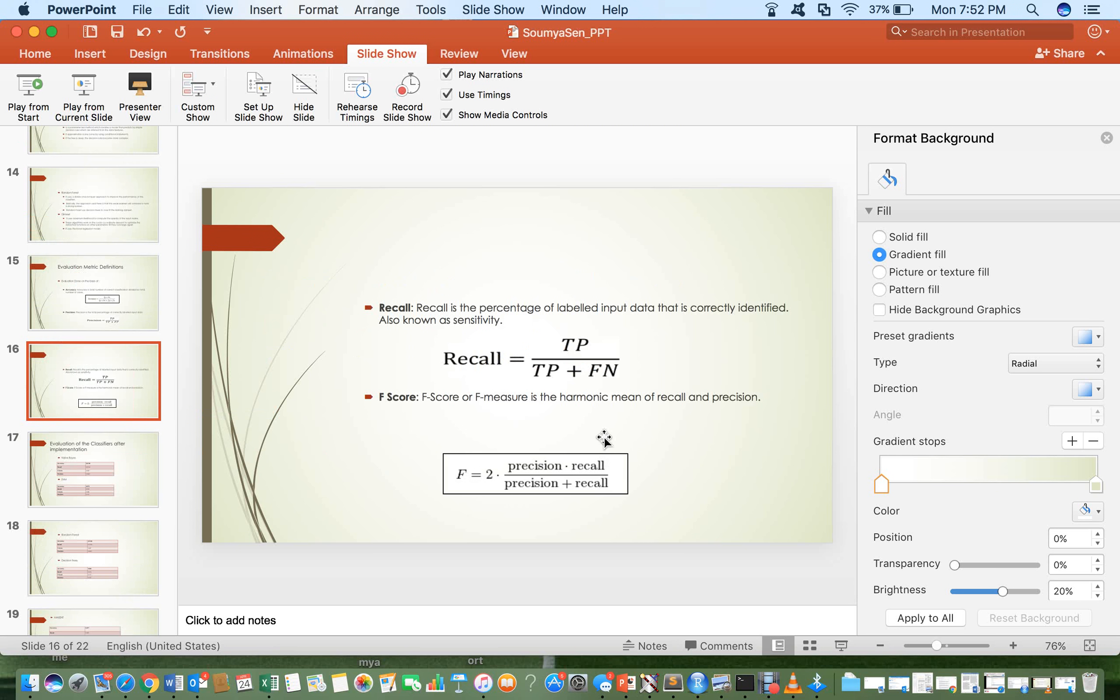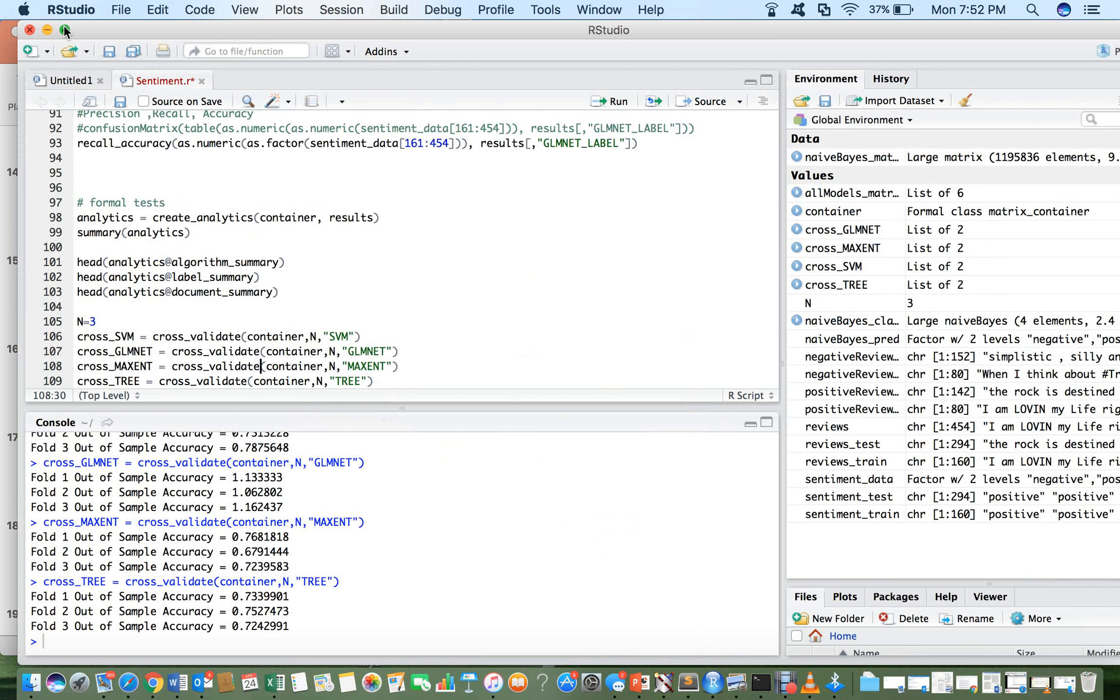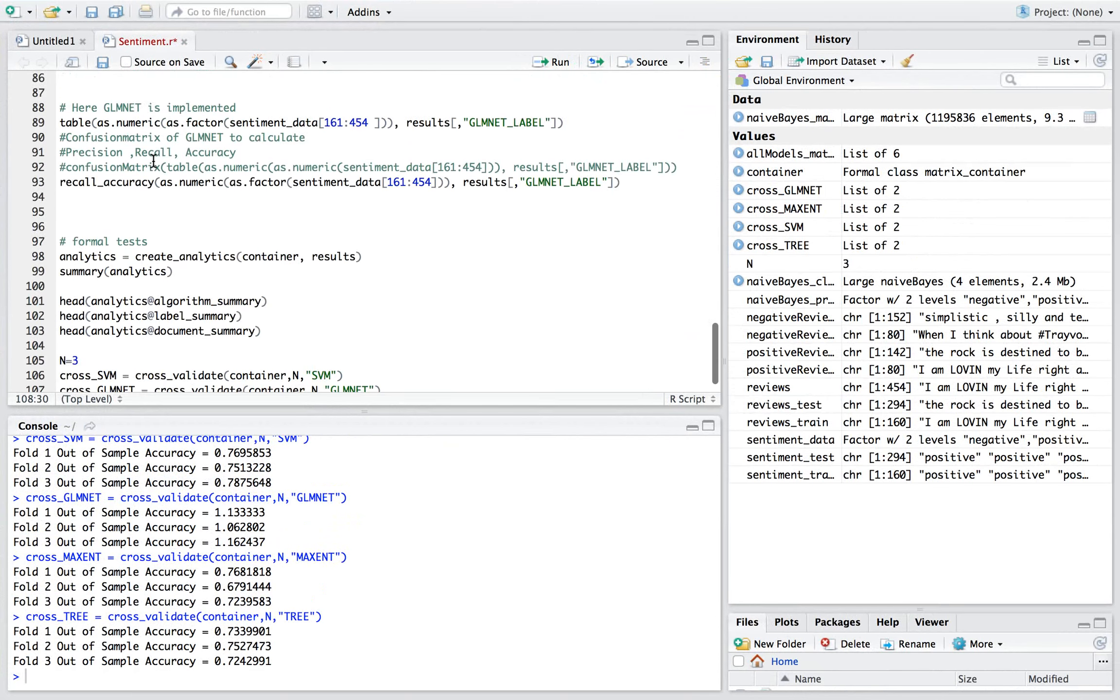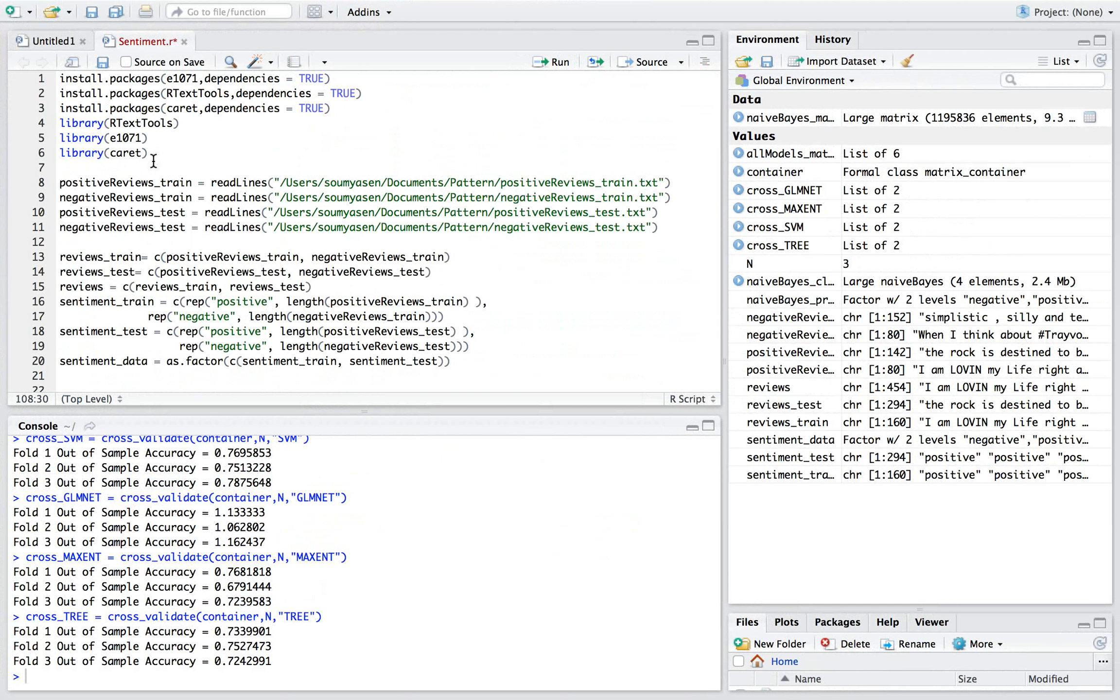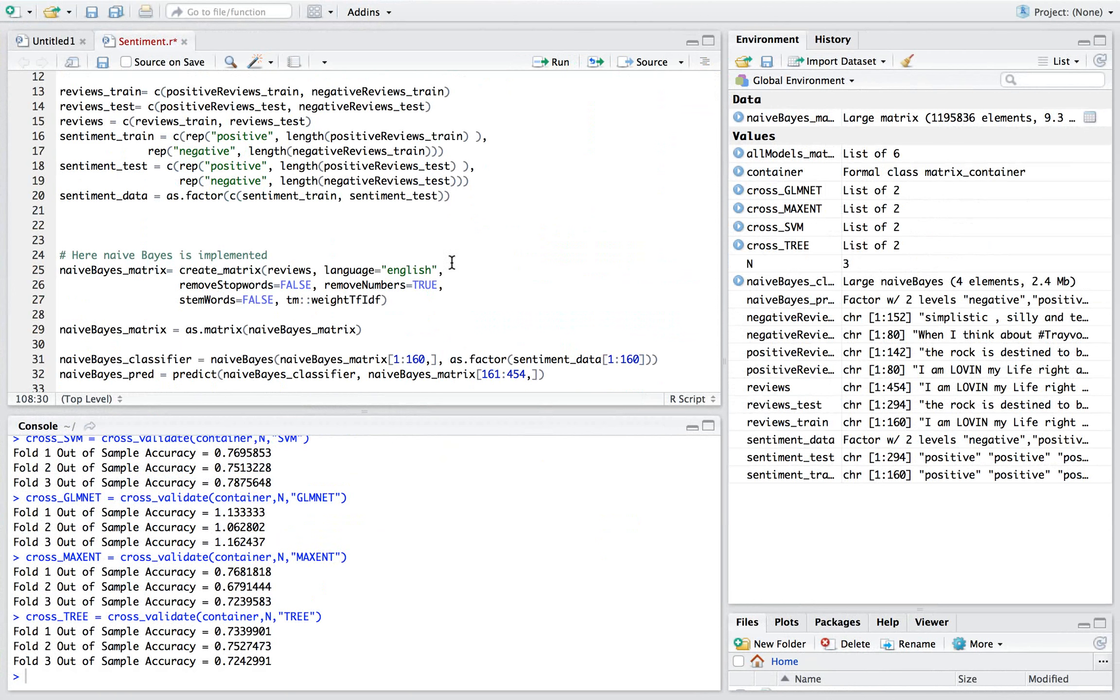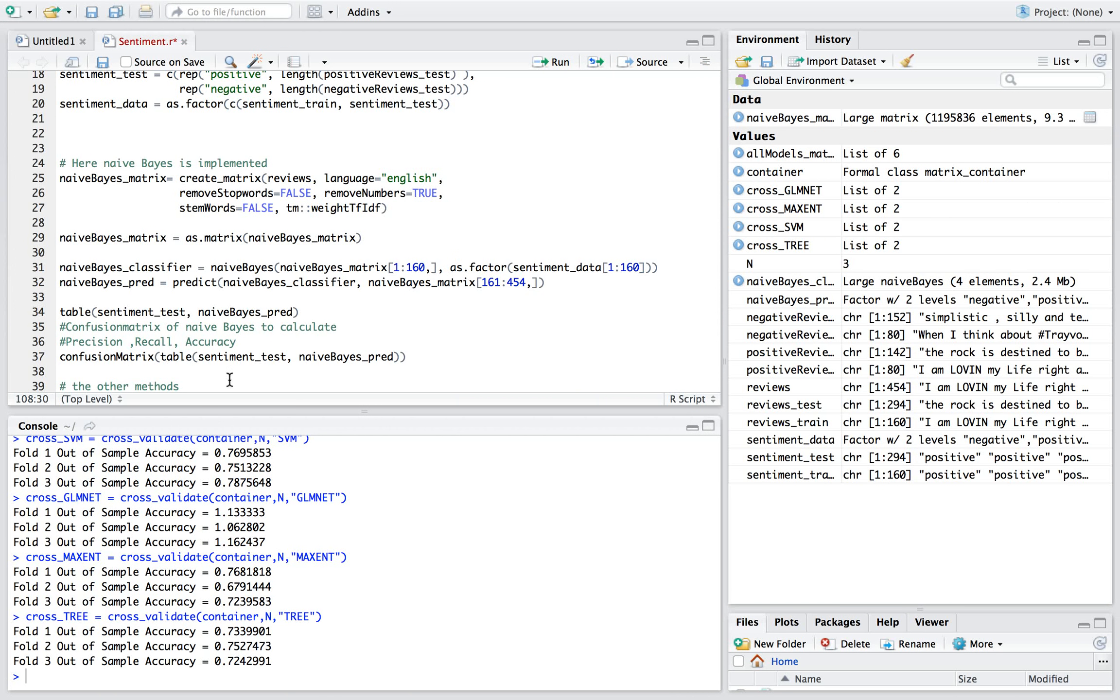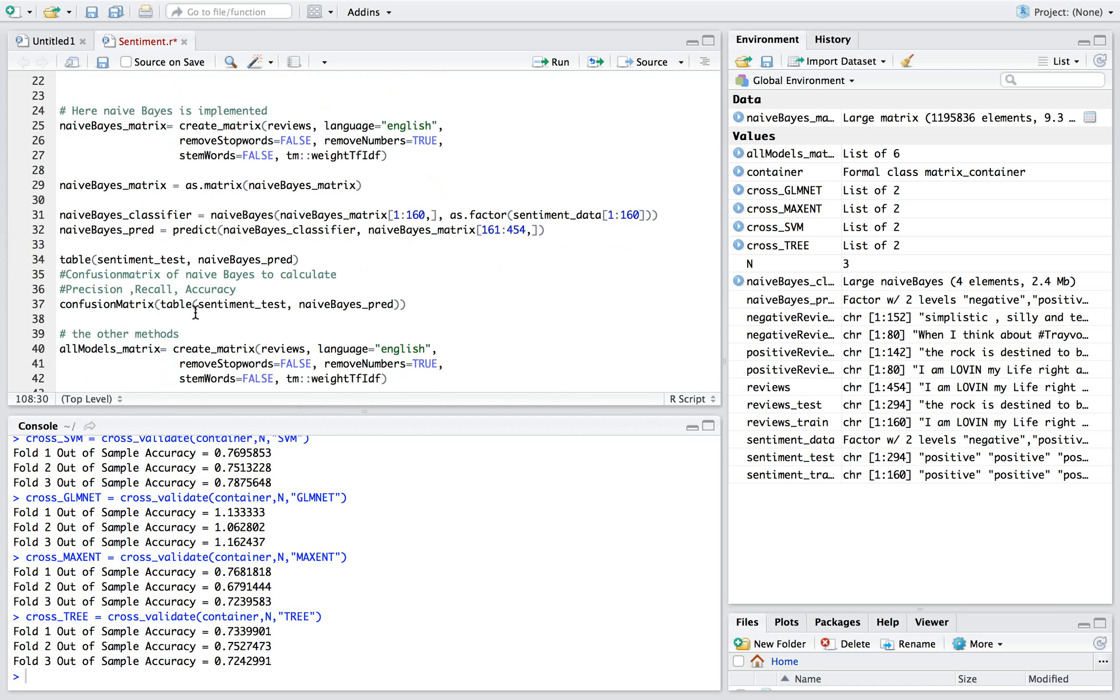Now, let us look at the code I have implemented using R programming. Here, as you can see, naive base is implemented. The confusion matrix is calculated and the various parameters are determined.